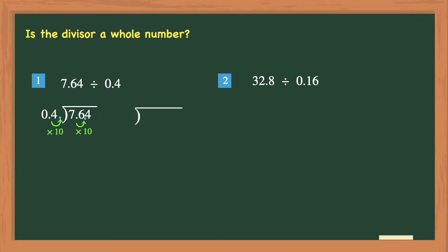Let's go ahead and rewrite this long division problem. Don't forget to bring the decimal point up to the quotient. Now you are ready to divide. Remember to follow these steps: Divide, multiply, subtract, bring down, and repeat.